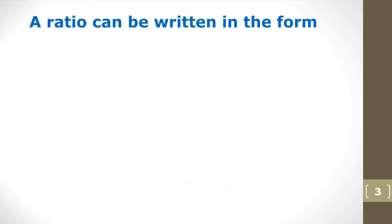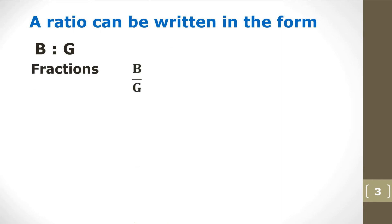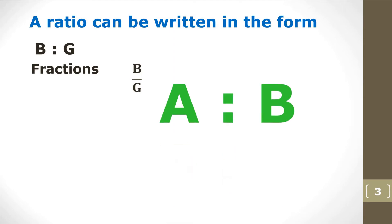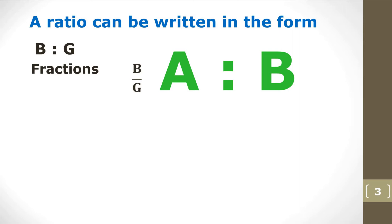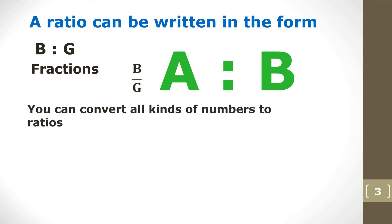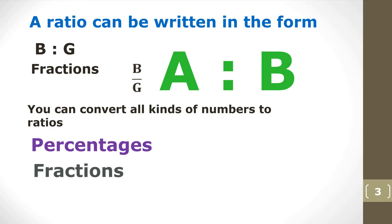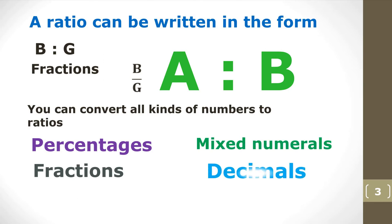A ratio can be written in ratio form, or it can be represented by fractions. When we talk about ratio, we talk about a quantity to another quantity — A to B, P to Q, and so on. We can convert all types of numbers to ratio: percentages to ratio, fractions to ratio, mixed numerals to ratio, and even decimals to ratio.